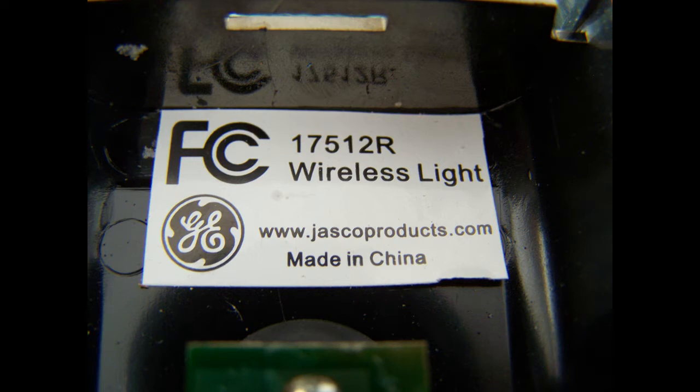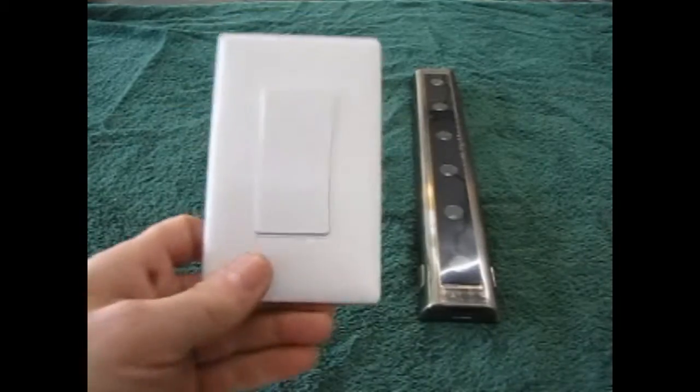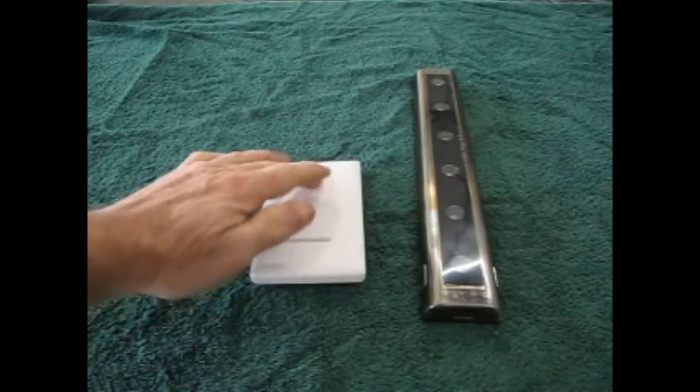This is the light that we'll rewire today. Originally, it came with a wall-mounted switch that used radio waves to turn on and off the light.